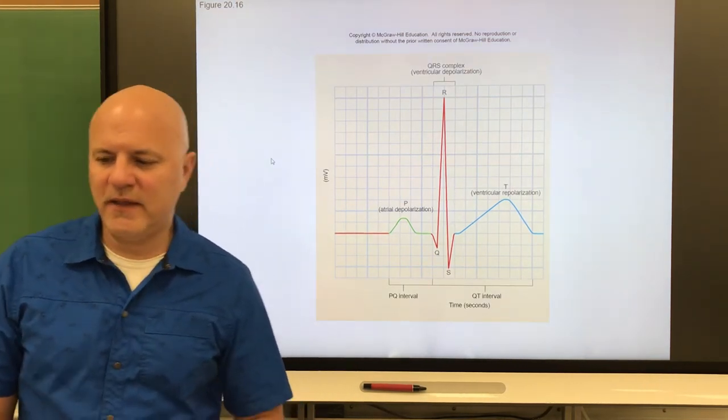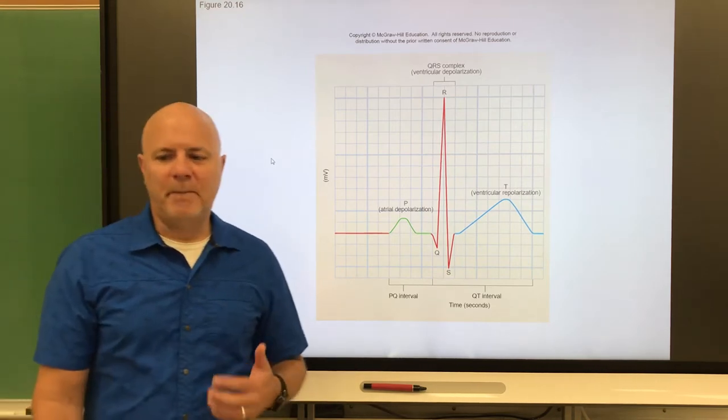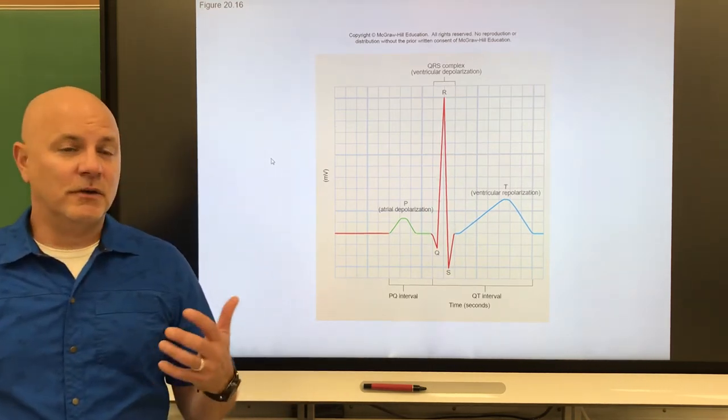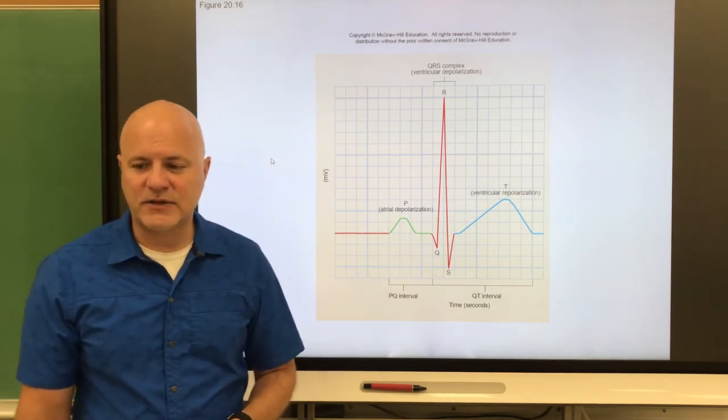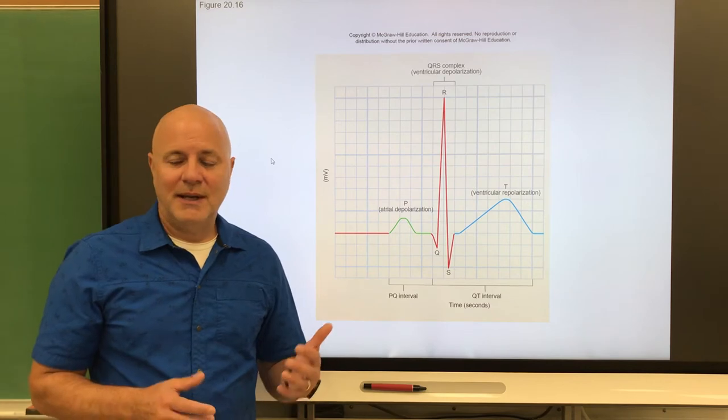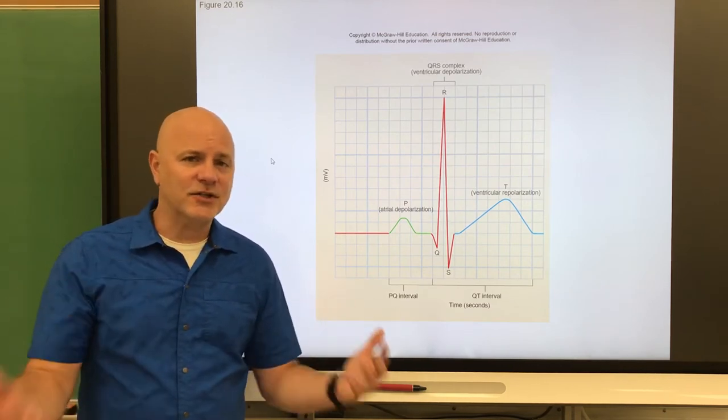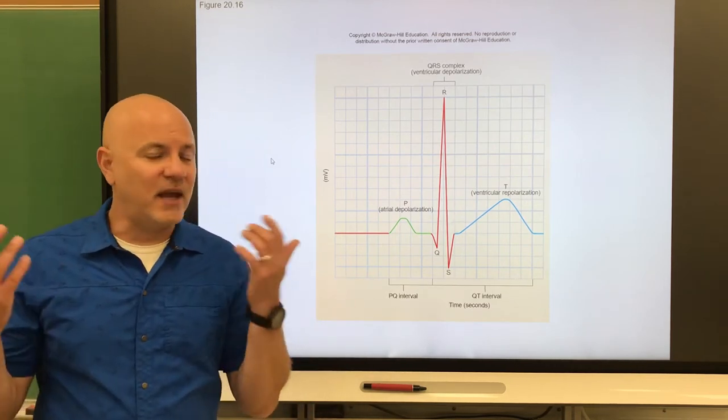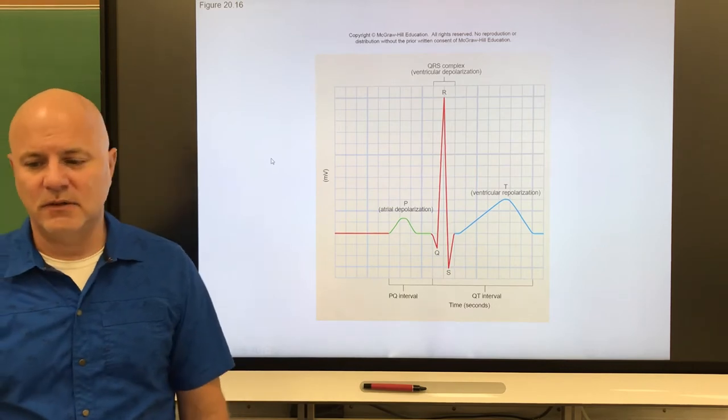Next is tachycardia. That's a fast heart rate, above 100 beats per minute. Obviously this occurs during exercise. This can also occur with a raise in body temperature, anemia because you're trying to get oxygen out to your body cells, excitement can do this, and certain medications can do this as well.